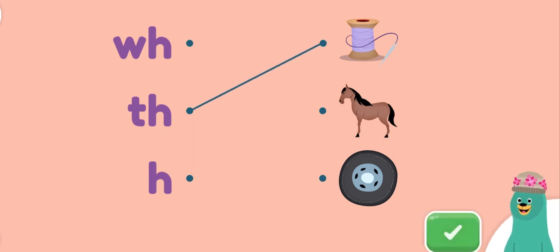Draw a line to match the picture with its beginning sound. W, wheel. W, wheel.